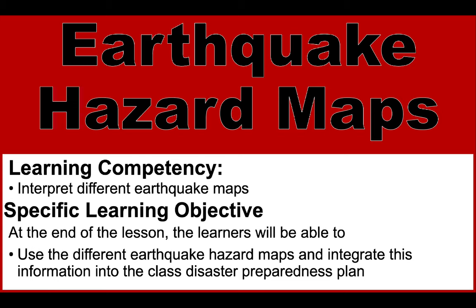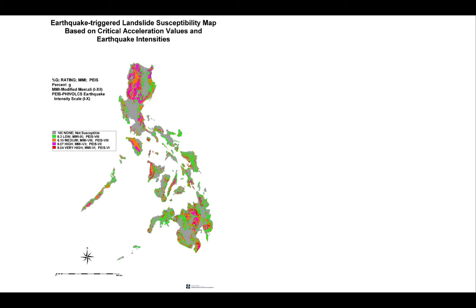In this video, we're going to talk about earthquake hazard maps. The learning competency for this video is to interpret different earthquake maps. The specific learning objective is to use the different earthquake hazard maps and integrate this information into the Class Disaster Preparedness Plan. This map shows the earthquake-triggered landslide susceptibility downloaded from the PHIVOLCS website.